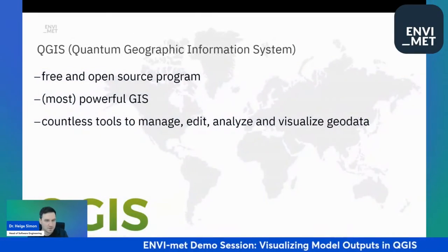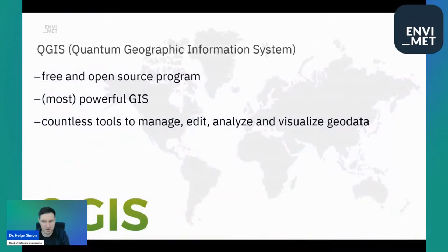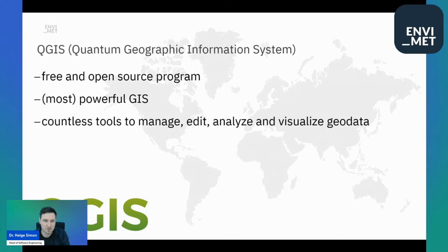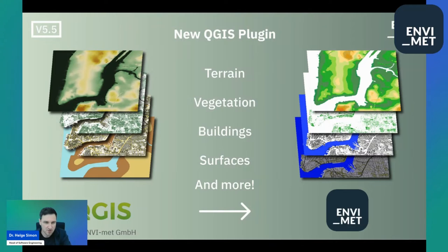As many of you are familiar, we recently developed a QGIS plugin. For those not too familiar with it, the QGIS plugin is basically a plugin to the free and open source program Quantum Geographic Information System, short QGIS. It is one of the most powerful GISs, if not the most powerful. It has countless tools to manage, edit, analyze, and visualize geodata. The QGIS plugin is capable of taking all this geodata information — terrain, vegetation, building surfaces and much more — and converting it to EnvyMet.